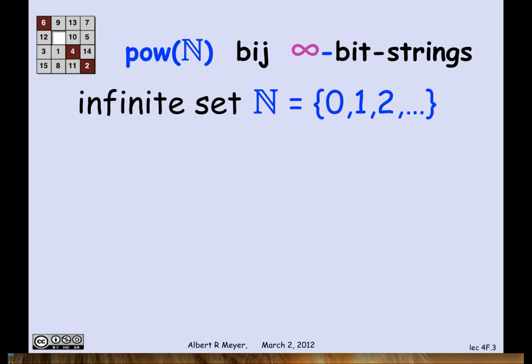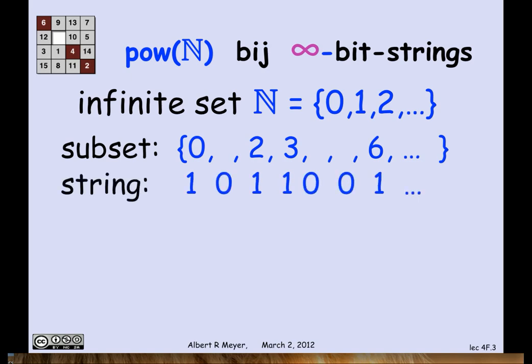There's the set of non-negative integers, 0, 1, 2, and so on. And let's look at an arbitrary subset of it. So 0 is in the subset, 1 is missing, 2 and 3 are there, 4 and 5 are missing, 6 is there, and so on. Then I just code the presence or absence of elements from the subset by writing down 1s or 0s in the corresponding places. So this subset would correspond to the infinite string that starts with 1, 0, 1, 1, 0, 0, 1 and goes on that way.